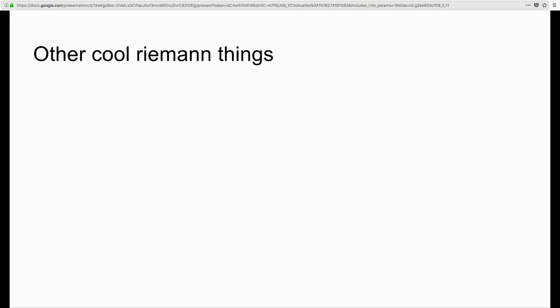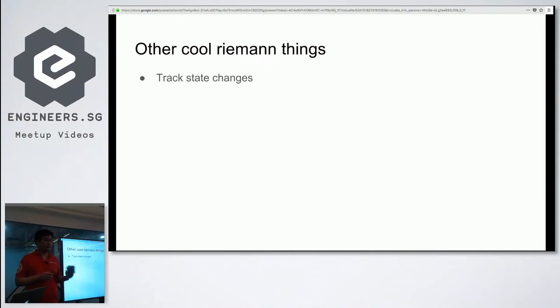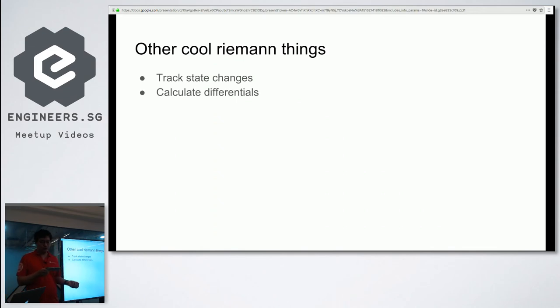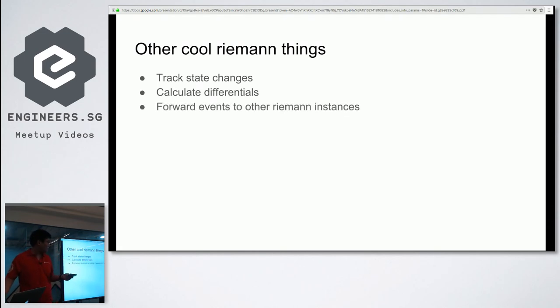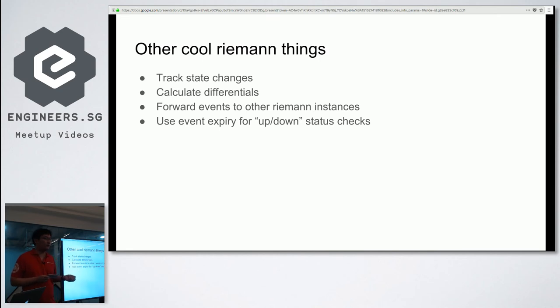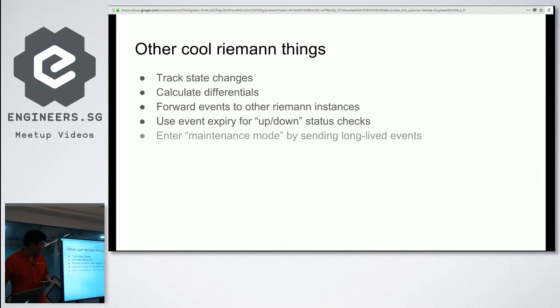To wrap up, here are some other cool things you can do with Riemann. You can track the state of your service over time and change your stream to only show differences between each data point. You can forward events to other Riemann instances. Each event comes with a TTL value, so if a host stops sending events, Riemann detects it, generates an expiry event, and you can use that to alert that the host is down. You can also send events to Riemann to indicate that you're doing maintenance on a host.